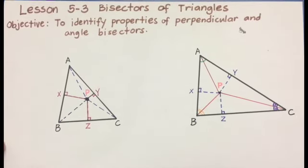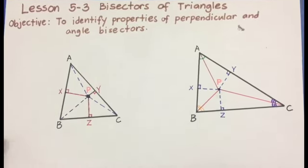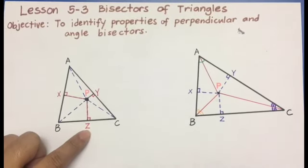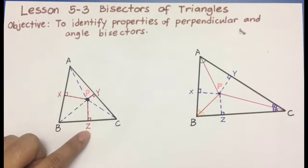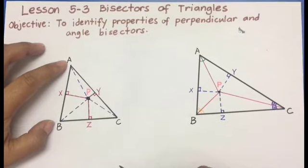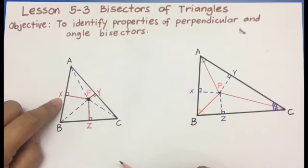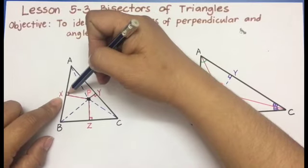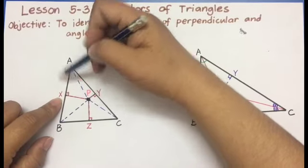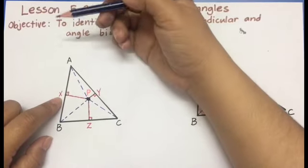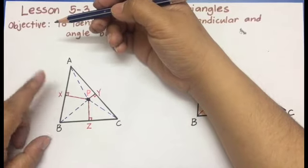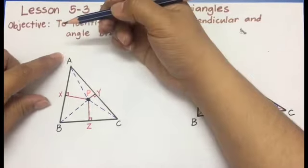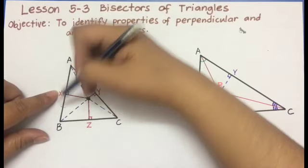In the first figure, we have triangle ABC with lines X, Y, and Z as the perpendicular bisectors. So side AB has a perpendicular bisector of line X, meaning line X forms a 90 degree angle to this side and line X divides AB into two congruent segments. Therefore, we can say that AX is congruent to BX.